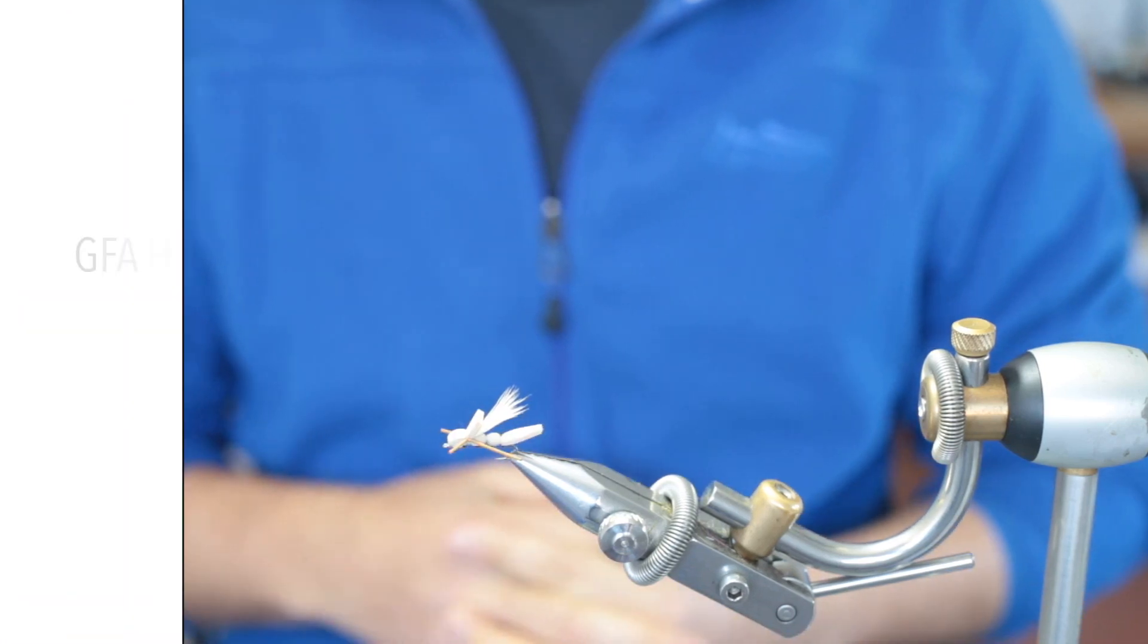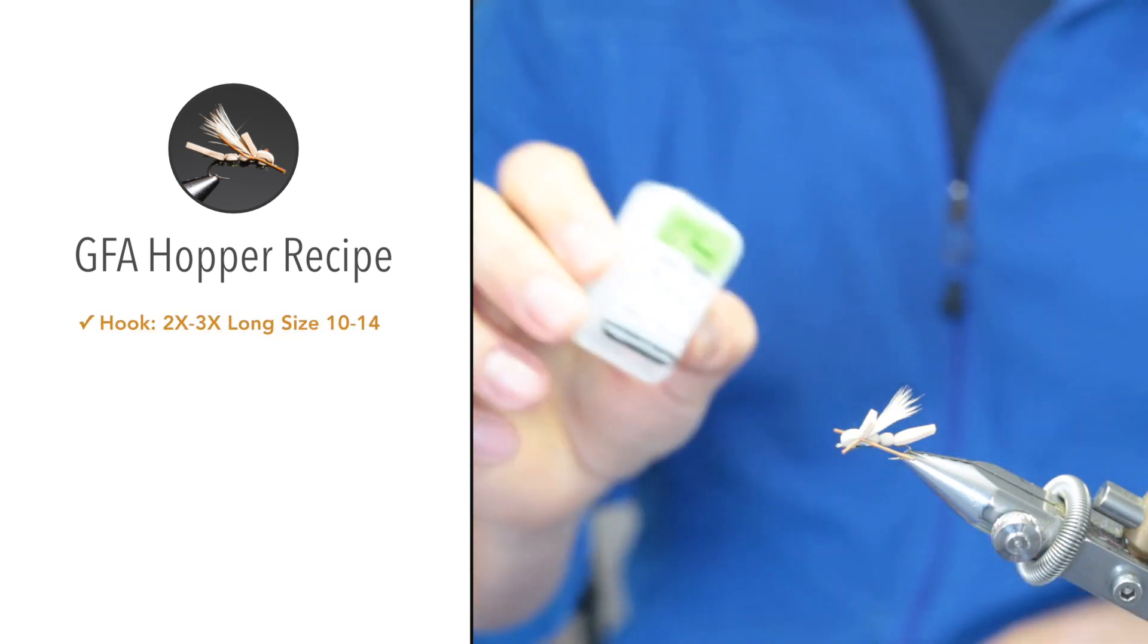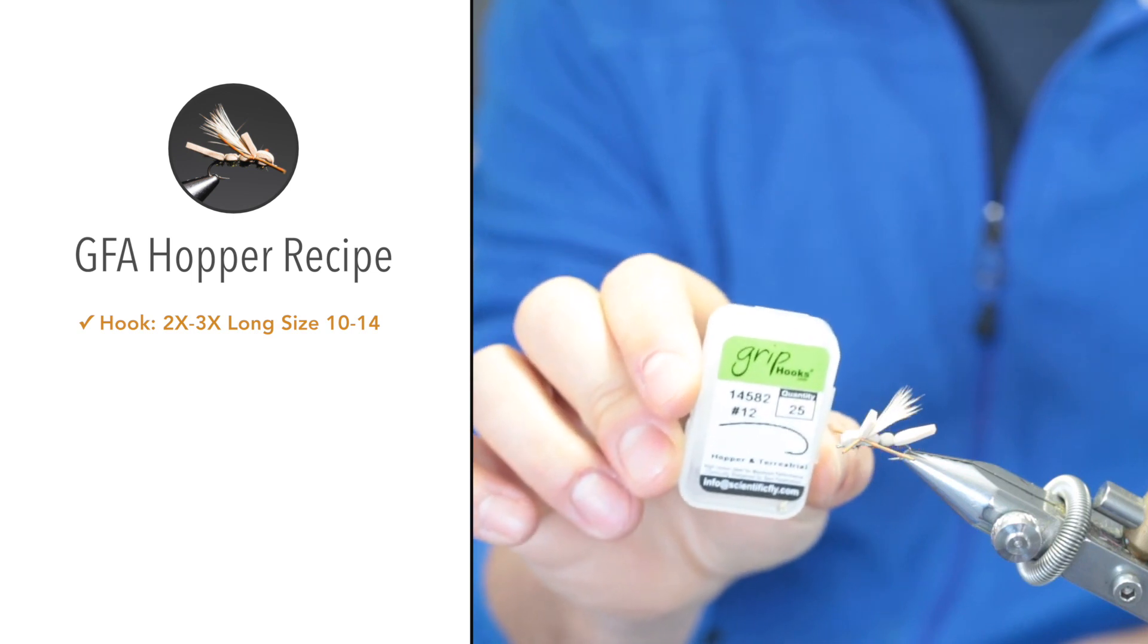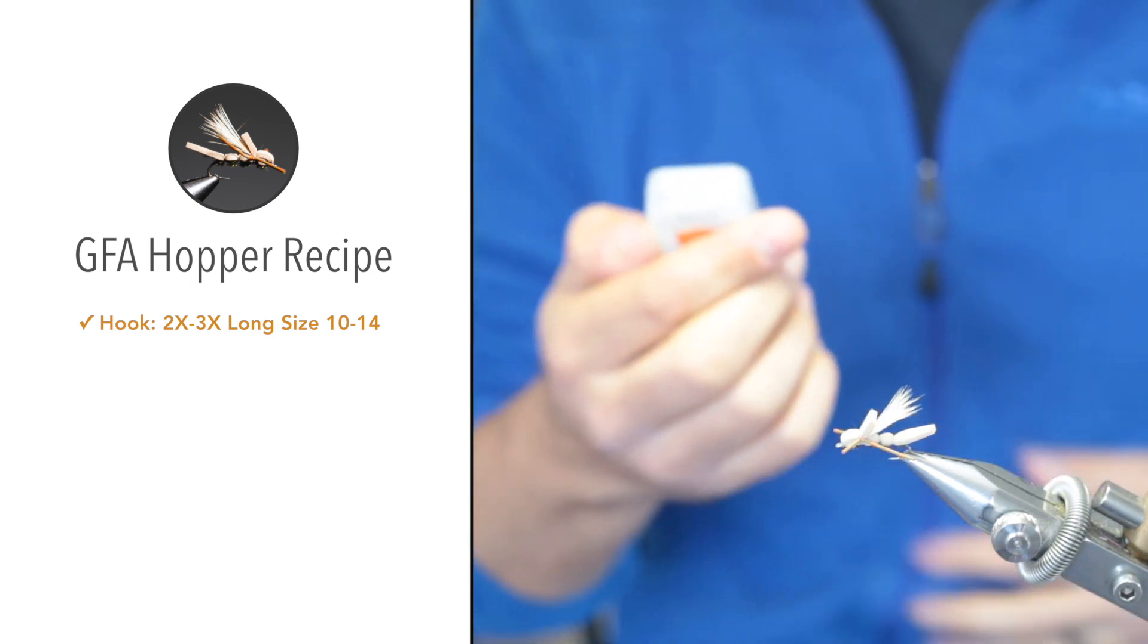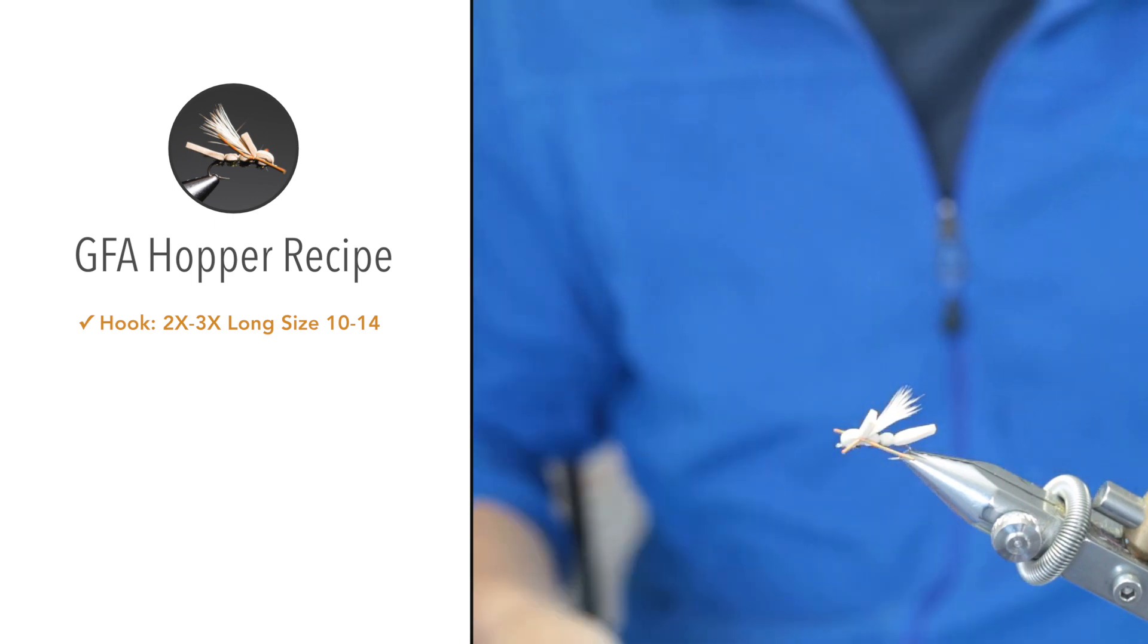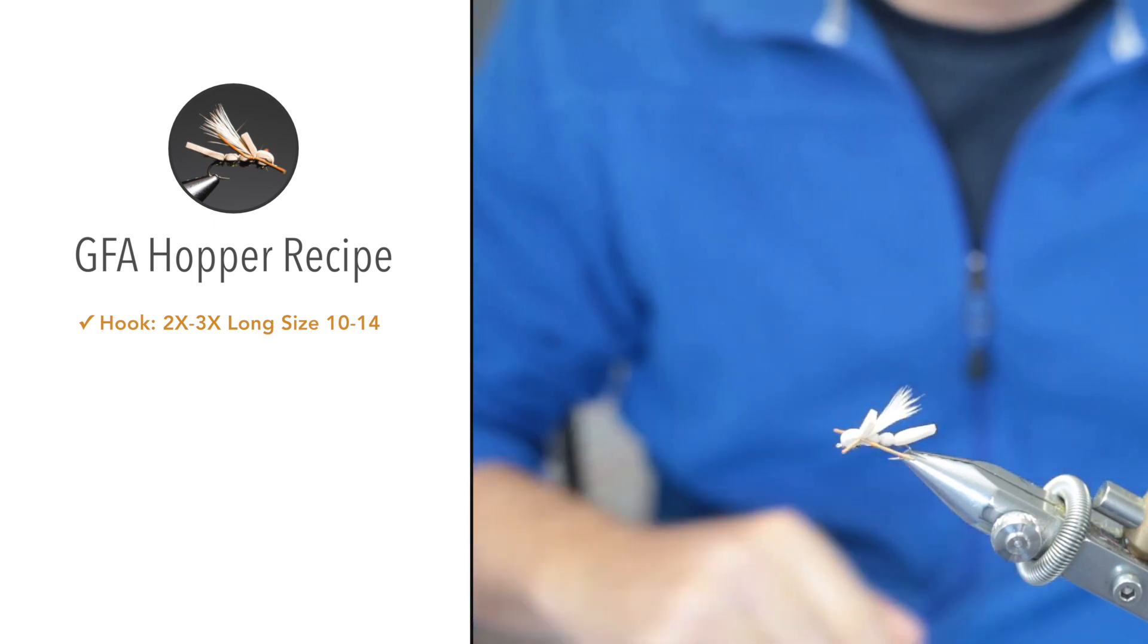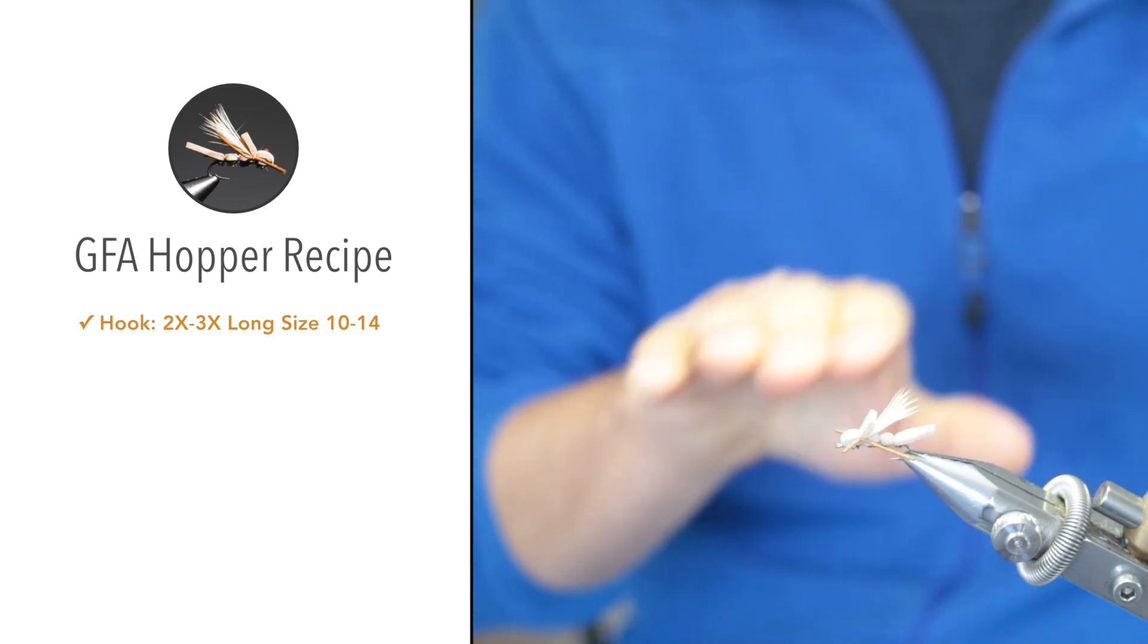Without further ado, the materials that you need to tie this fly: For the hook I'm using a curved shank hook by a company called Grip, size 12, model number 14582. You can use any 2X or 3X long hook shank. I like using this specific hook on this pattern as I like the curve in the shank and the profile that it gives the fly.